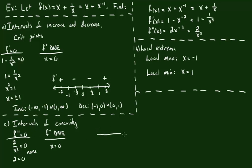We make a number line with just x equals 0 marked, giving two intervals. We pick one point from each interval — let's say negative 1 and positive 1 — and test them in the second derivative. Putting negative 1 into the second derivative gives negative 2, so the second derivative is negative, meaning the entire interval from negative infinity to 0 has a negative second derivative. Putting 1 into the second derivative gives 2 — positive — so the second derivative is positive on the entire interval from 0 to infinity.